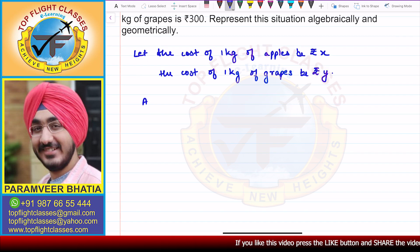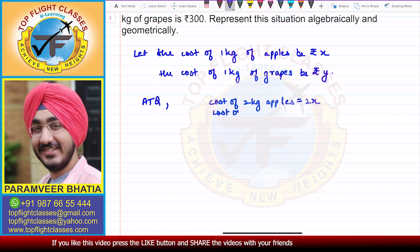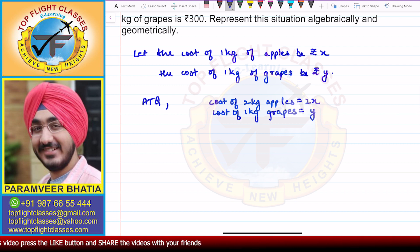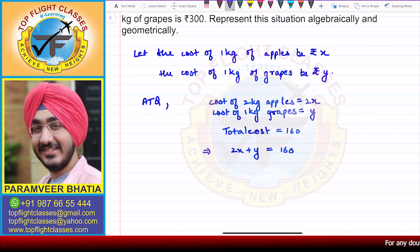According to the question, the cost of 2 kg of apples will be equal to 2x, and the cost of 1 kg of grapes is equal to Y. The total cost is 160, so this implies that 2x plus y is equal to 160. This is the first equation — the algebraic representation.